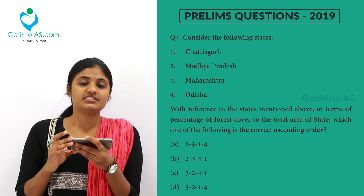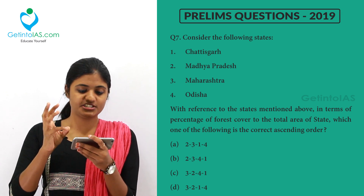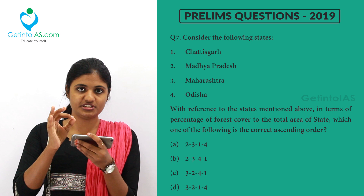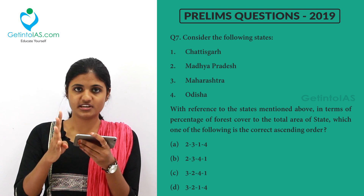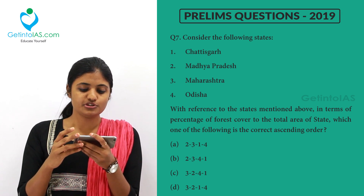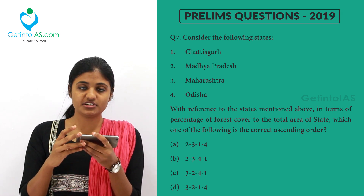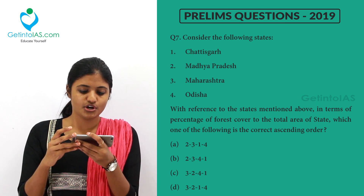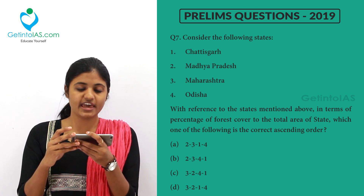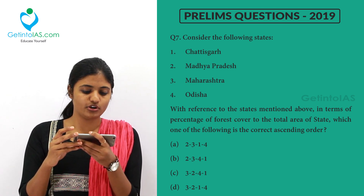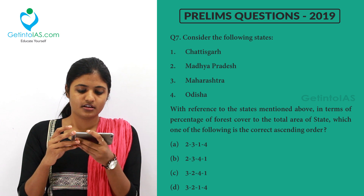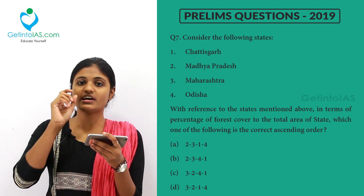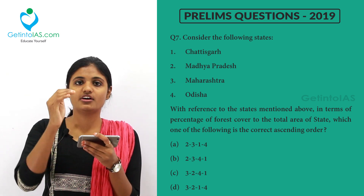Next question: with reference to the states — Chhattisgarh, Madhya Pradesh, Maharashtra, and Odisha — in terms of percentage of forest cover to the total area of the state, which one is the correct ascending order? Ascending means from small to big. Note the key point: they are asking the percentage of forest cover to total area, so you must consider both the total area and the forest cover.